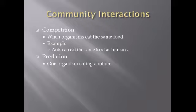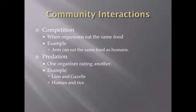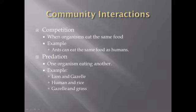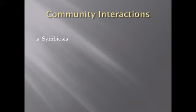The next community interaction is predation — when one organism eats another. Examples include a lion eating a gazelle, or a human eating rice. Even though rice is a plant, it was alive, so this counts as predation. A gazelle eating grass is also predation. One organism — human or gazelle — is consuming another living organism, whether animal or plant.